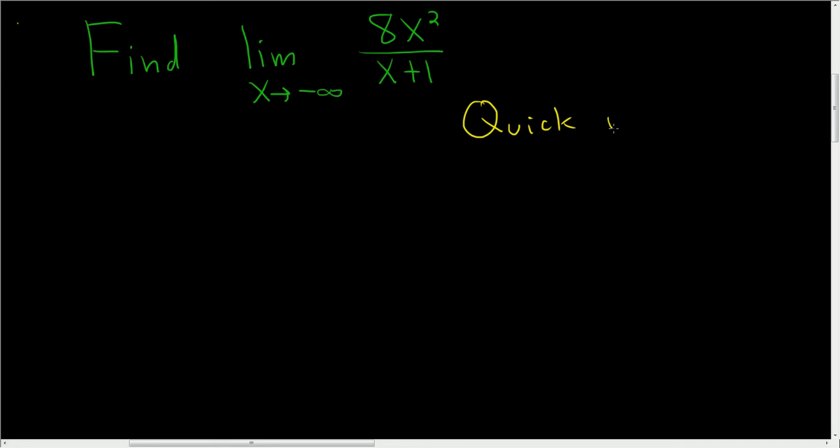So the quick way or the fast way is to think about it. You can ignore the one. As x approaches negative infinity, who cares about the one? The numbers are going to become obscene.